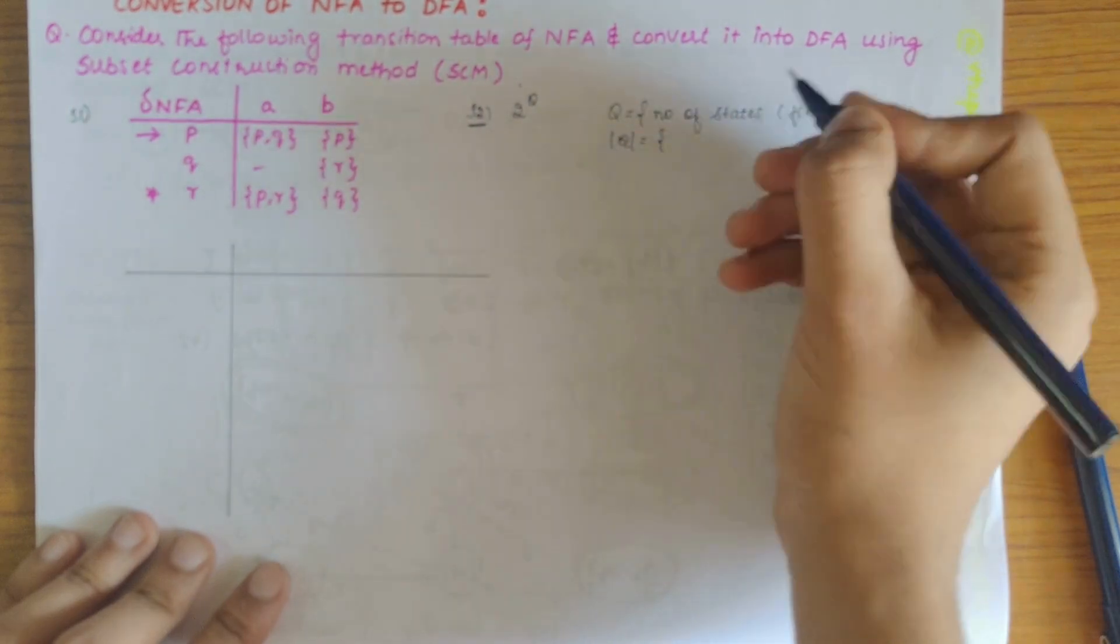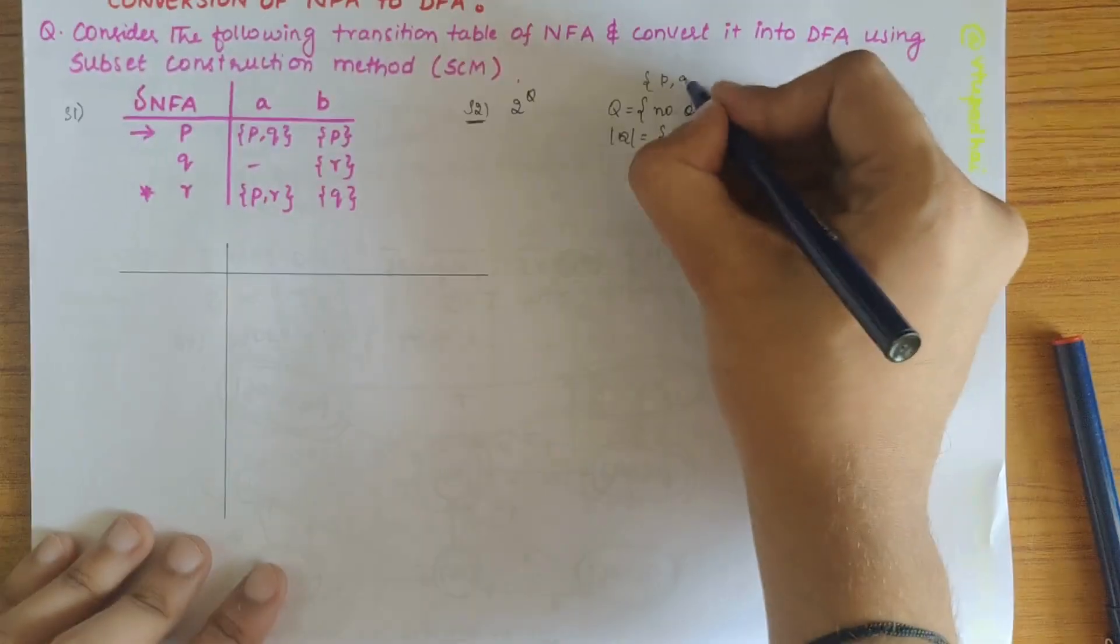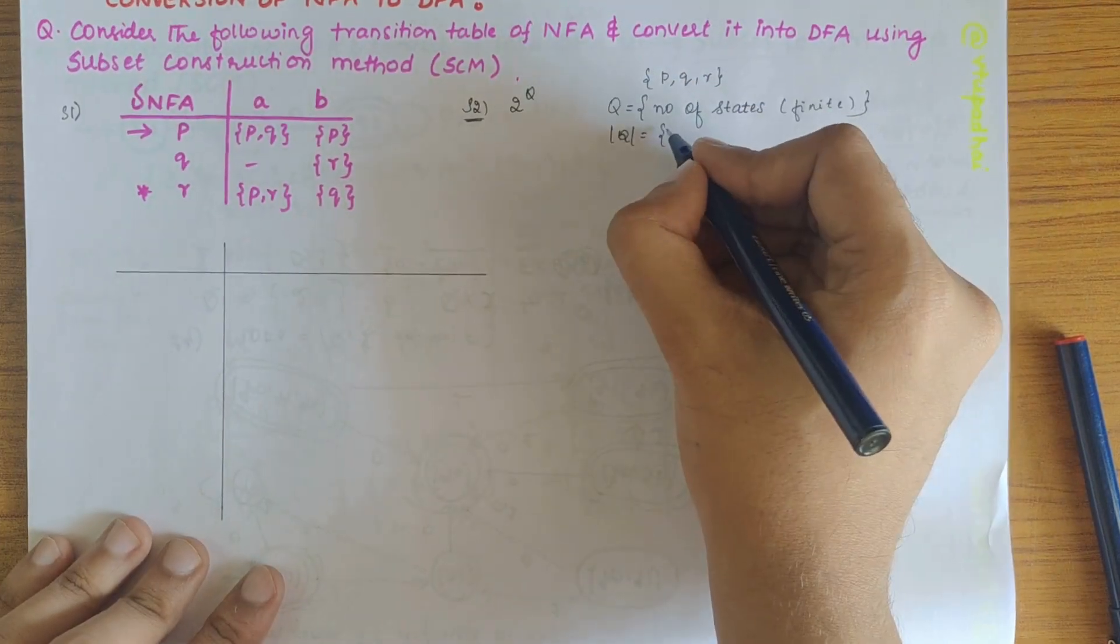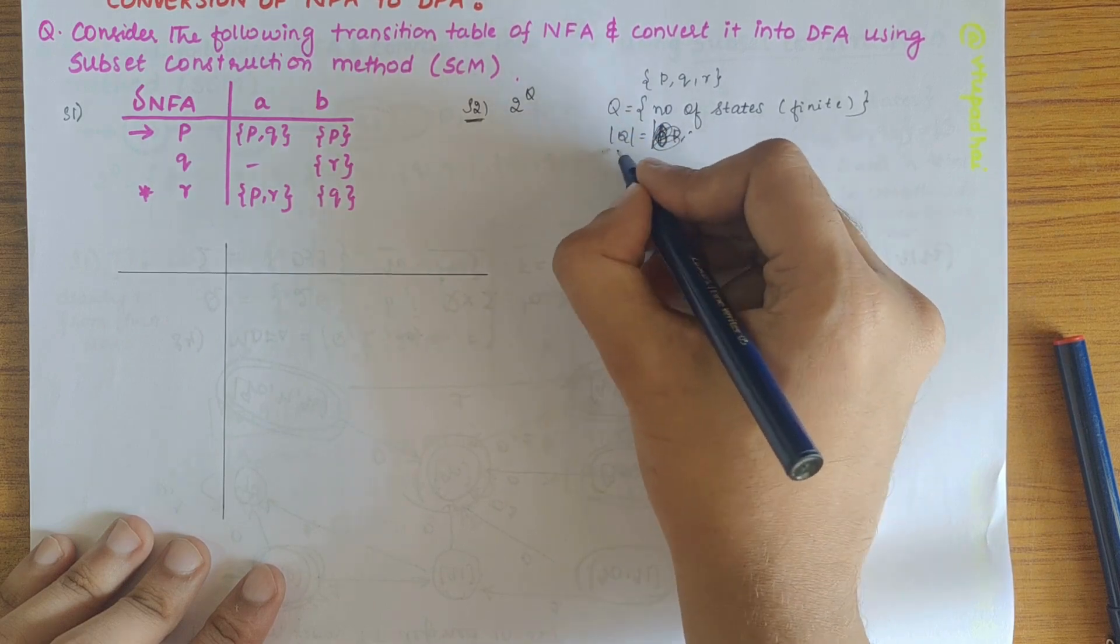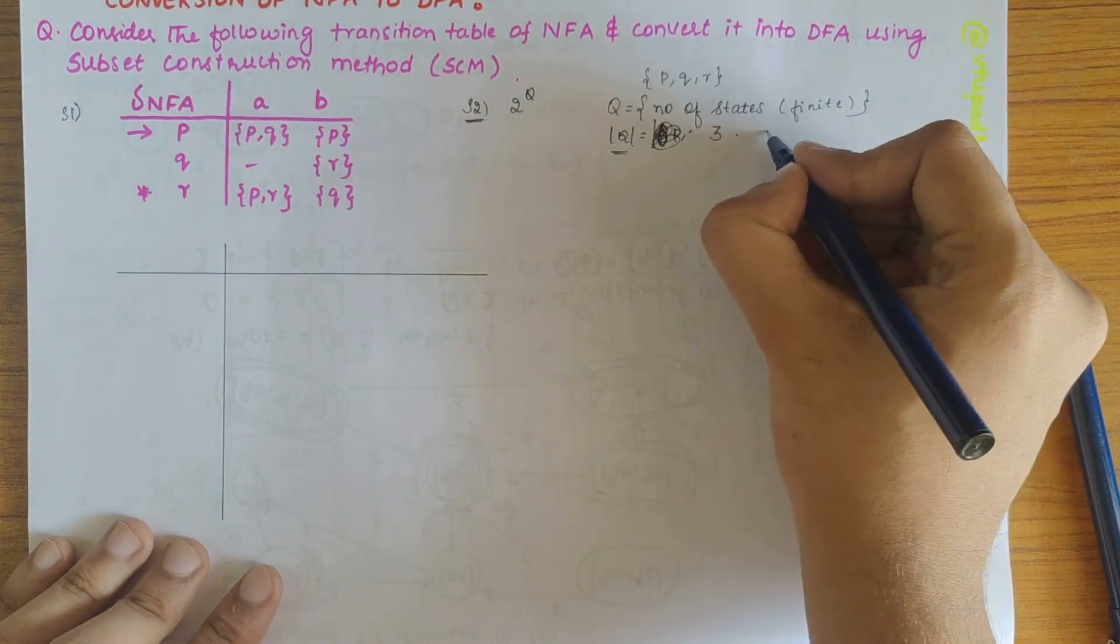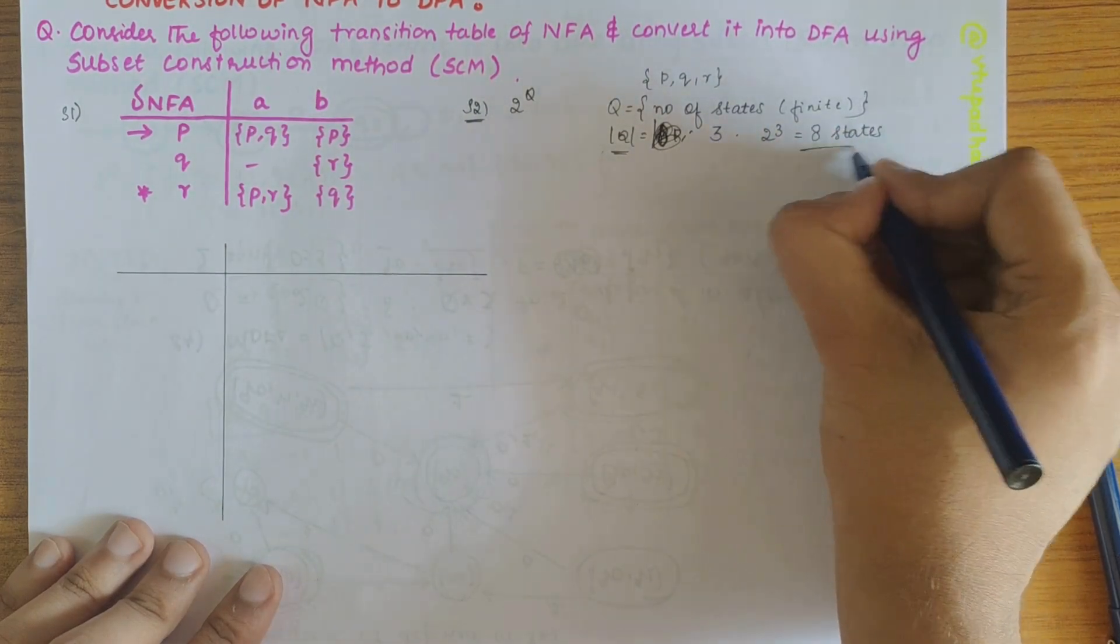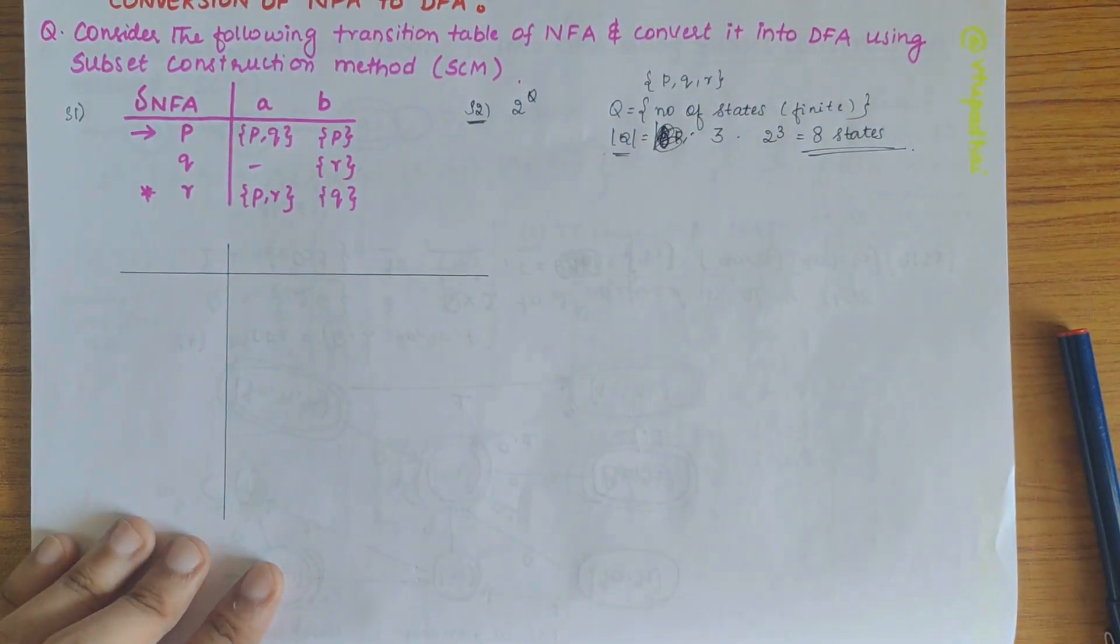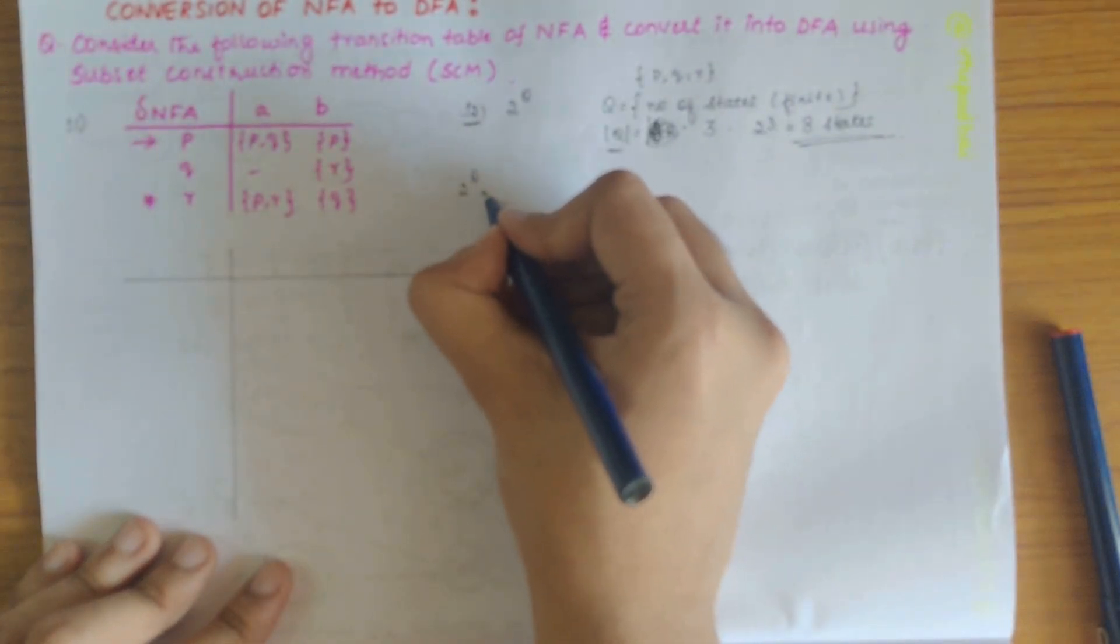So mod of q, here in the question q given are p, q and r. So mod of q is the total number of states here that is 3. So there are 2 power 3 states that is 8 states in total to be considered for constructing the DFA. So let's write all the possible states.